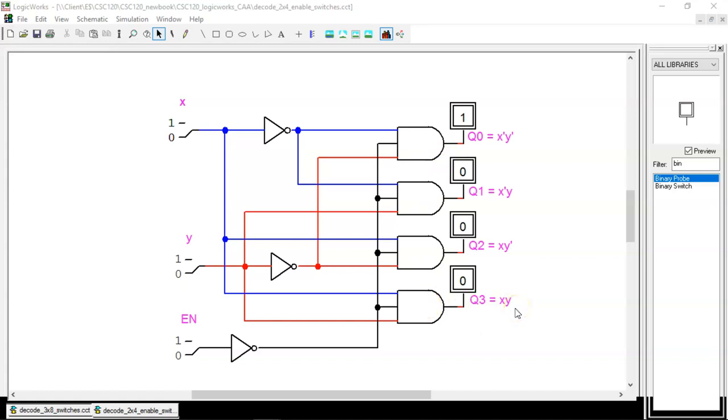The other big change is the switch labeled EN. What does it do? Pause the video and trace the wires. Ask yourself, what happens when EN equals 1? What happens when EN equals 0? Restart the video when you think you know.